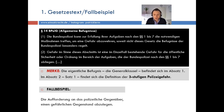Als Beispiel – man kann viele Beispiele bei der Generalklausel bringen. Ein Beispiel wäre zum Beispiel, Sie fordern eine Person auf, einen gefährlichen Gegenstand abzulegen. Ein anderes Beispiel wäre, wenn Sie eine Person auffordern, den Hund an die Leine zu nehmen, wenn der da am Bahnhof rumläuft und möglicherweise zu einer Gefährdungssituation in Bezug auf Reisende führt.